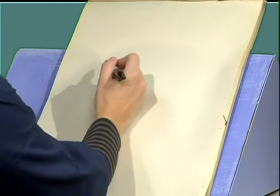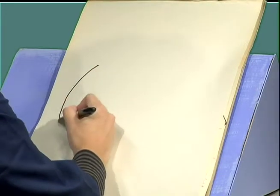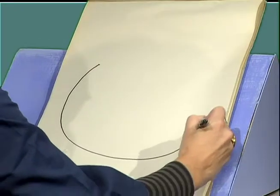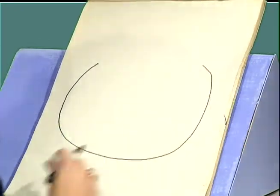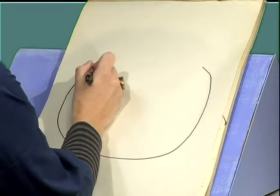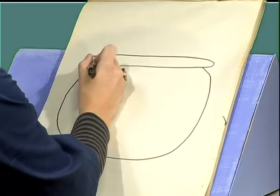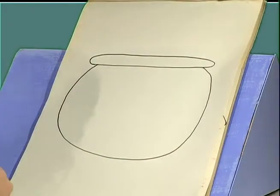First, we're going to start with the fishbowl for the turtle to live in. And we're going to do just part of a circle like that. Then we add the lip to the top of the bowl. Do sort of a hot dog shape like that.